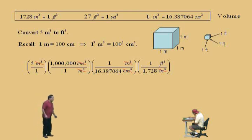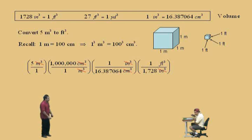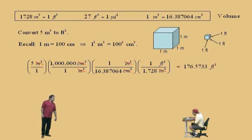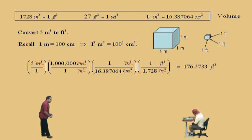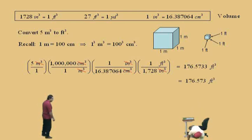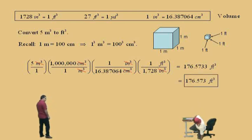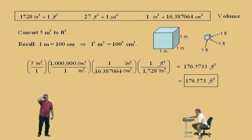So now we're going to figure out how many of those little cubic feet fit in that cubic meter box. Put the numbers in your calculator and you get 176.573 feet cubed. We're going to round this to the nearest thousandths: 176.573 feet cubed. Don't forget to box your answer, and that's it for conversions.